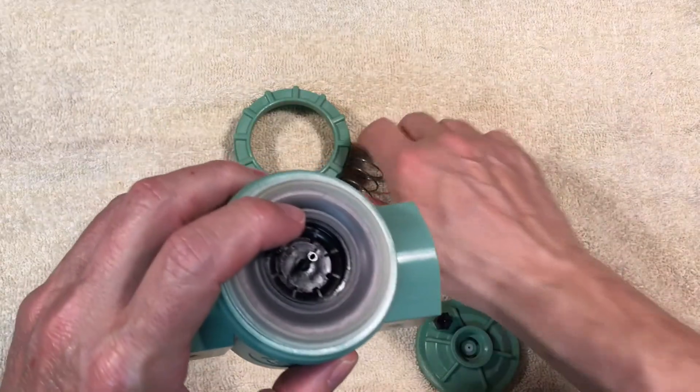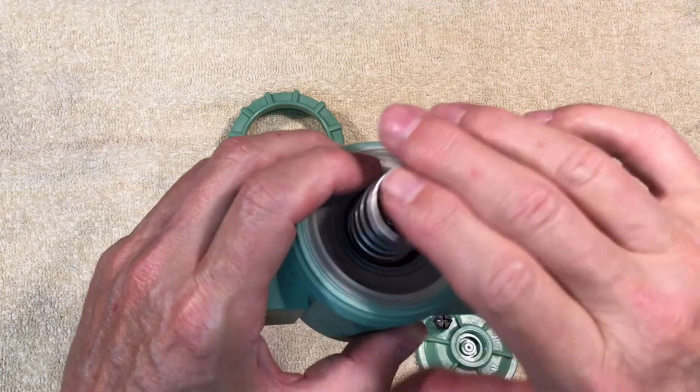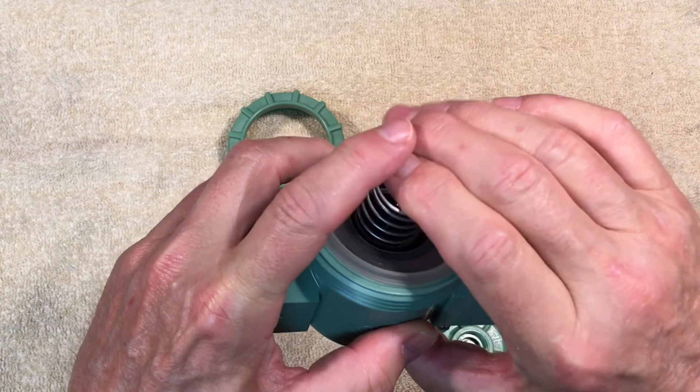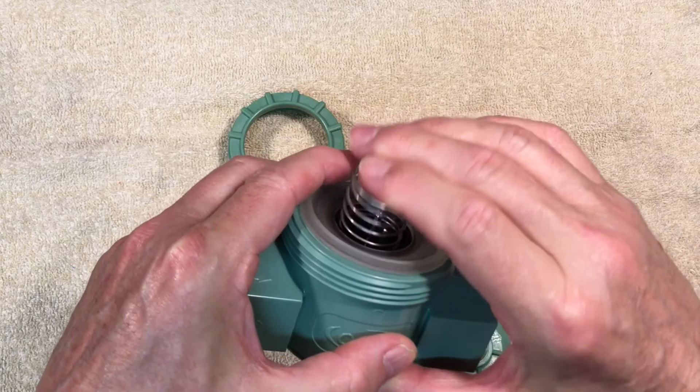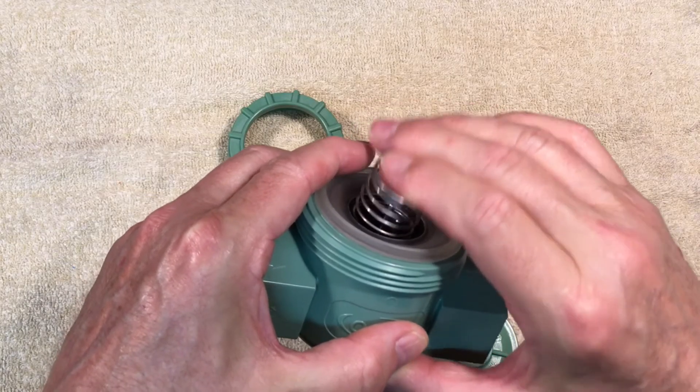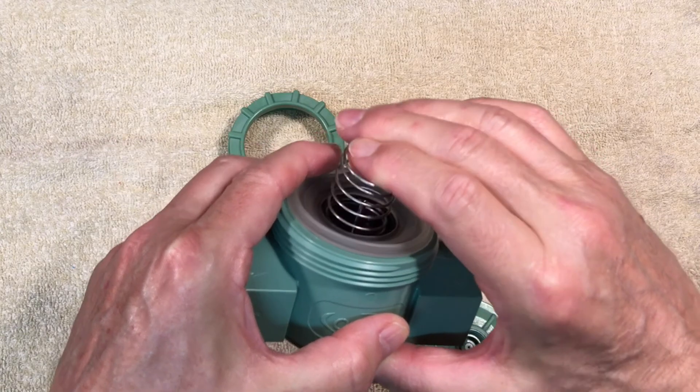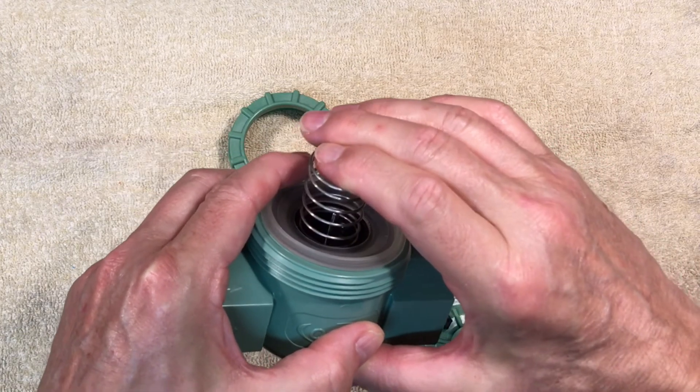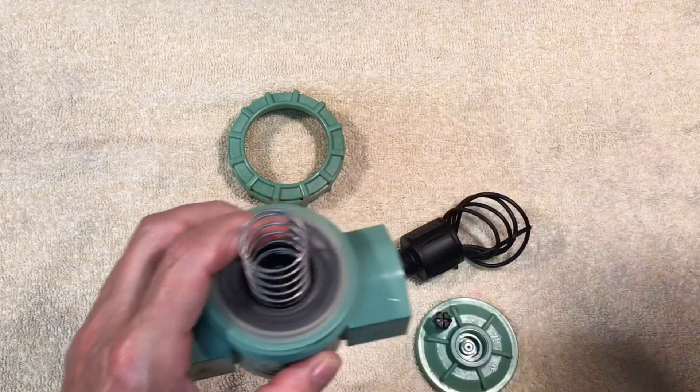The spring assists in keeping the diaphragm down and also makes sure the diaphragm returns completely to the down position when the solenoid is de-energized. Once the pressure is the same under the diaphragm and over the diaphragm, there is no force acting on it to move it up or down. The spring helps to make sure the diaphragm returns to the off position when the solenoid is turned off.